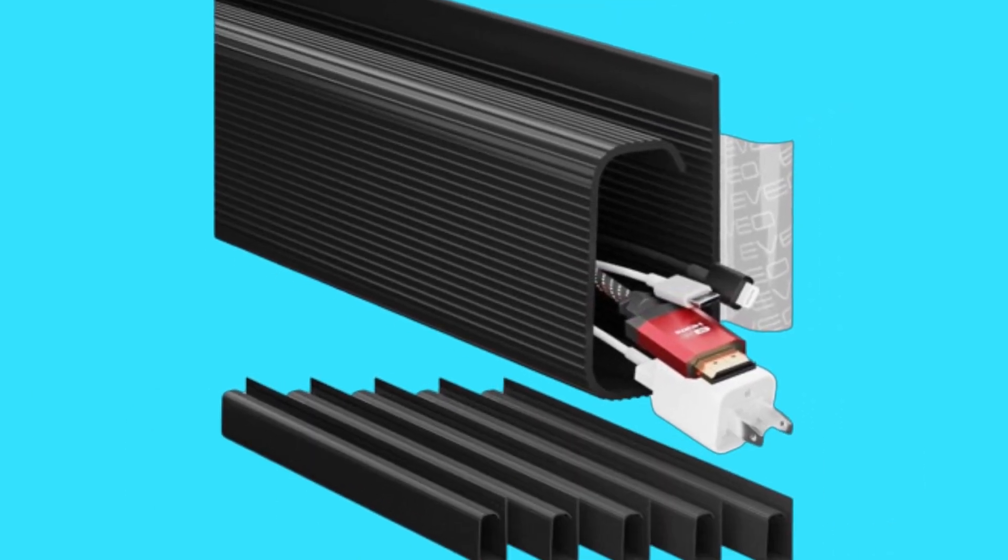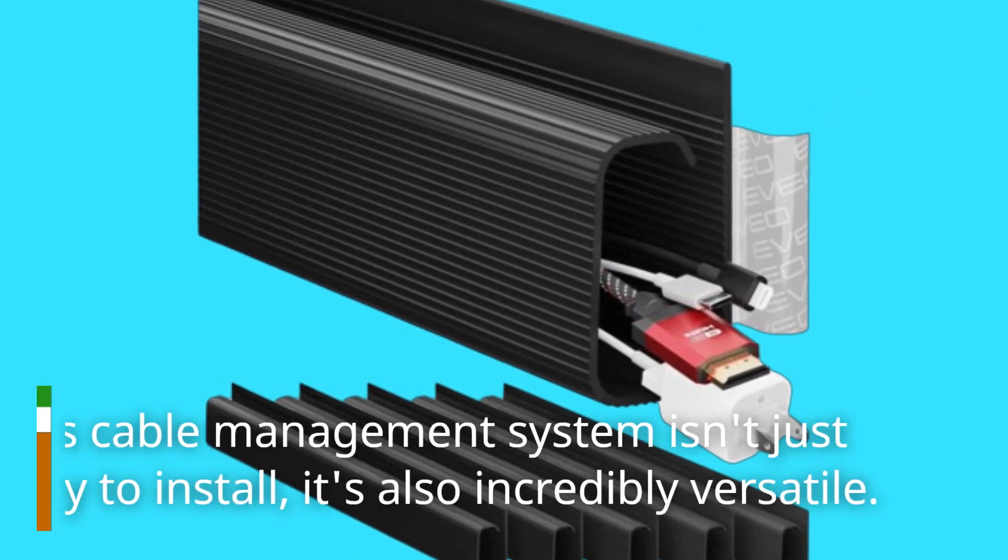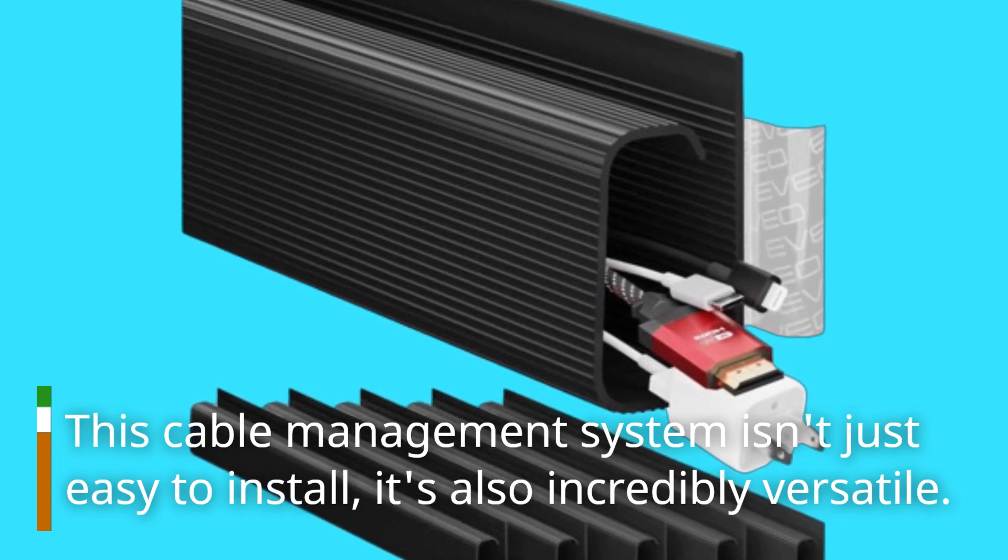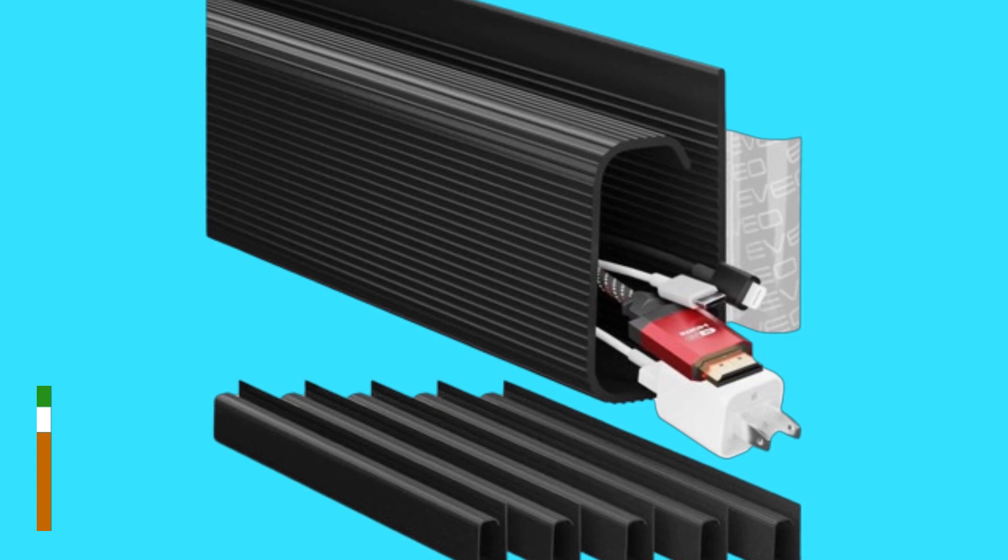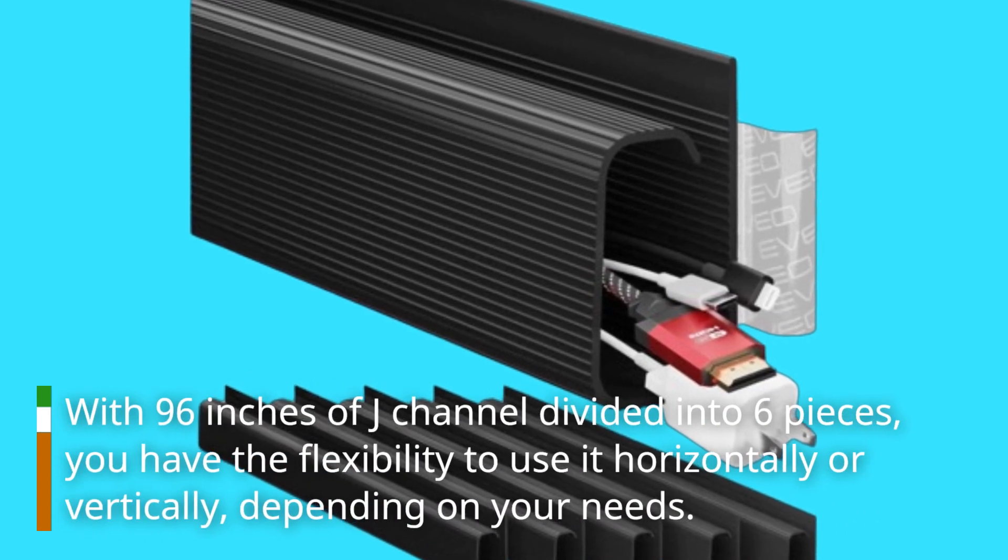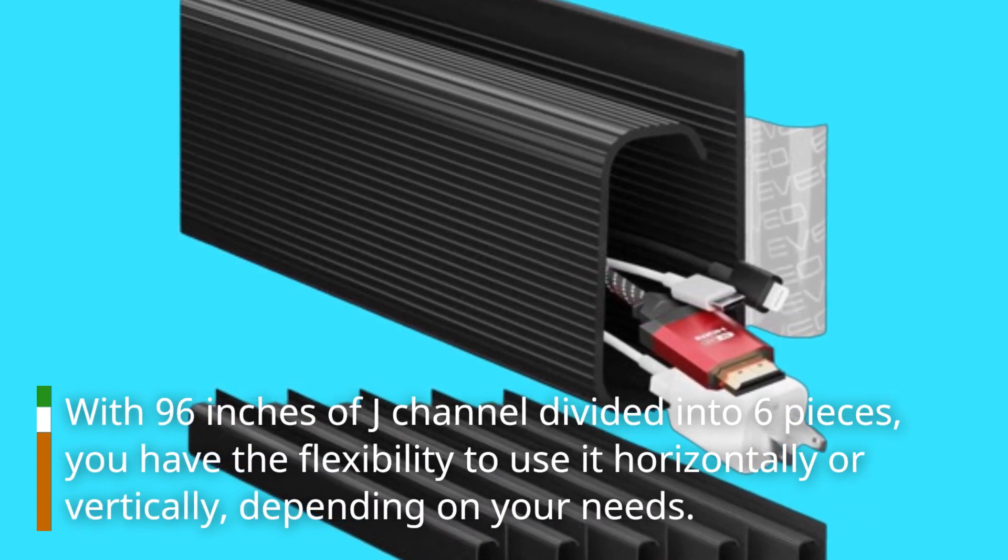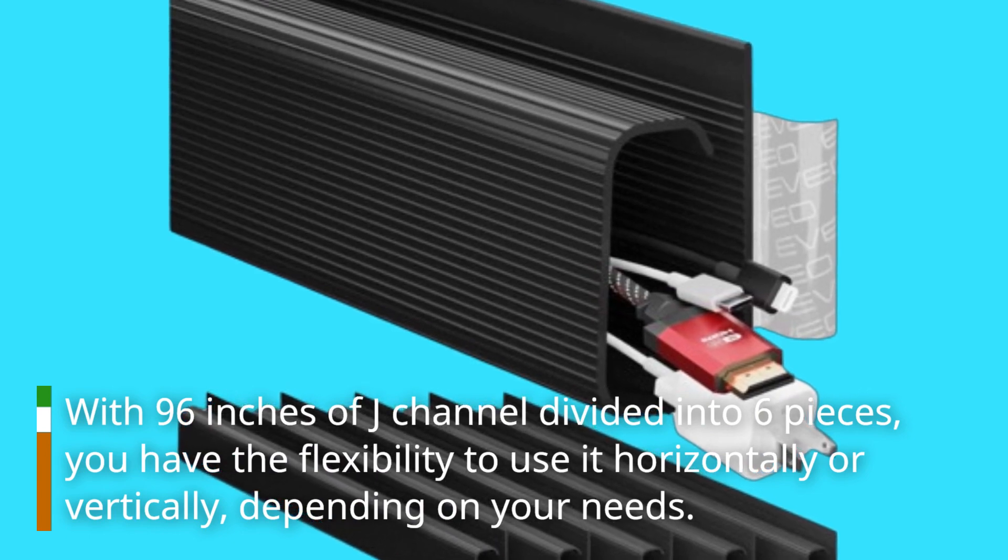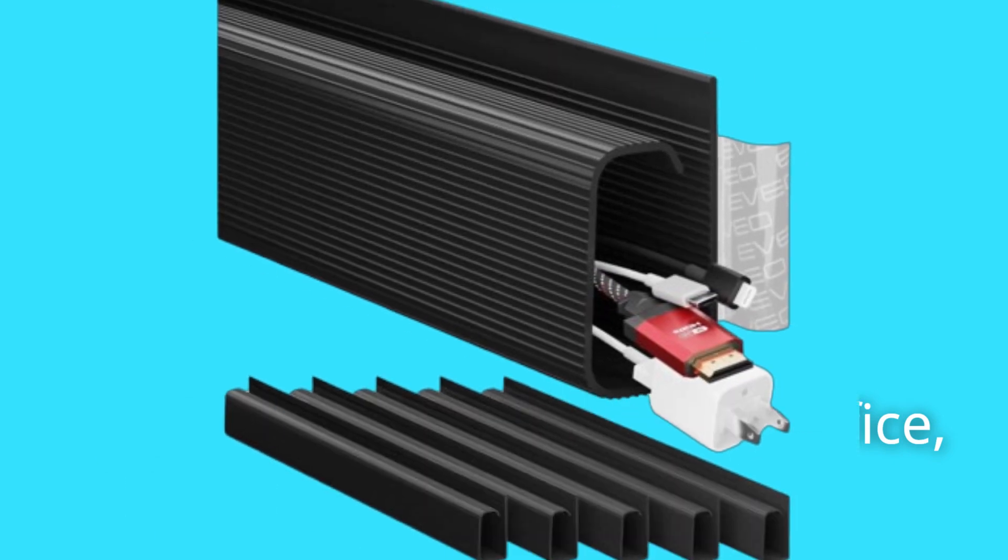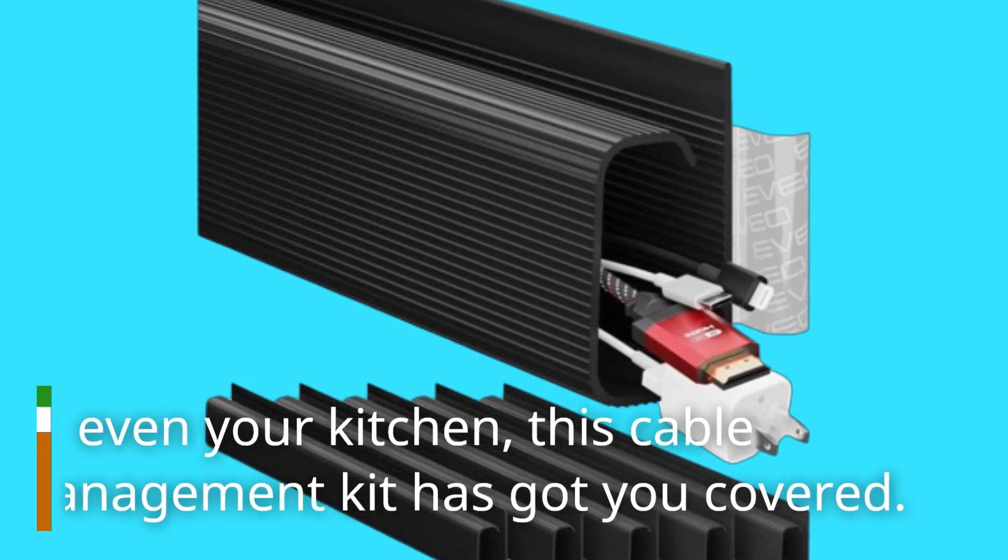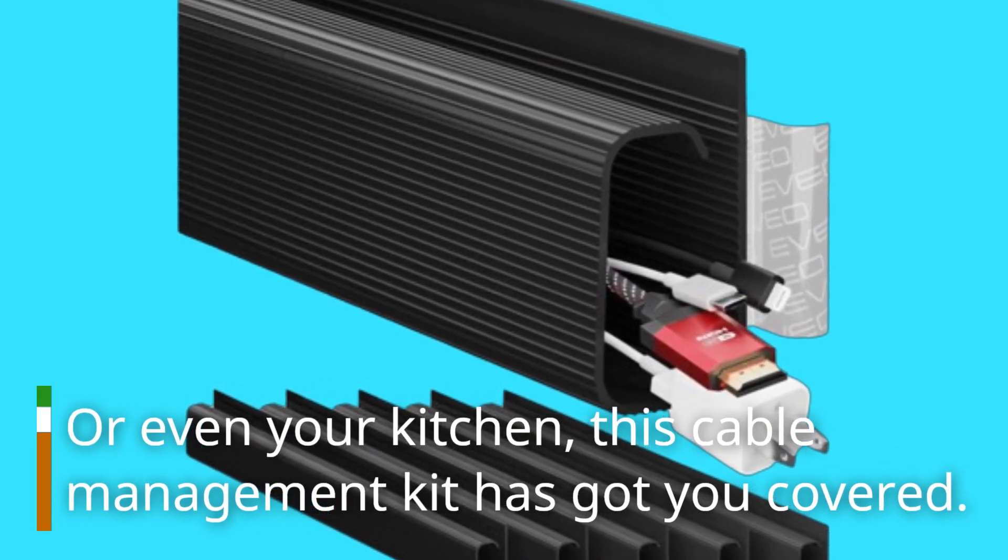But wait, there's more. This cable management system isn't just easy to install, it's also incredibly versatile. With 96 inches of J-channel divided into six pieces, you have the flexibility to use it horizontally or vertically depending on your needs. Whether it's for your home office, entertainment center, or even your kitchen, this cable management kit has got you covered.